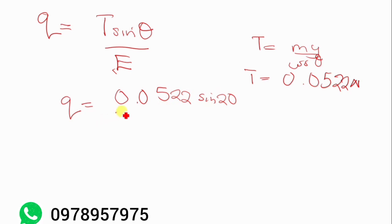So we're going to have our T is going to be equal to 0.0522 sine. Our theta is 20 over E is 100,000. So now our Q is going to be equal to, when we punch that in the calculator, 0.0522 times sine, times sine 20. Then all of this divided by 100,000.